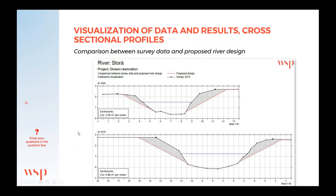In the same way we can also visualize data and results on a cross-sectional profile. In this example we show a stream where the dark black line is the surveyed river, and then you have shown that you would like to change the slopes of the stream and make it more flattened. Many of these visualizations can be used to talk to landowners about the project you propose to make.